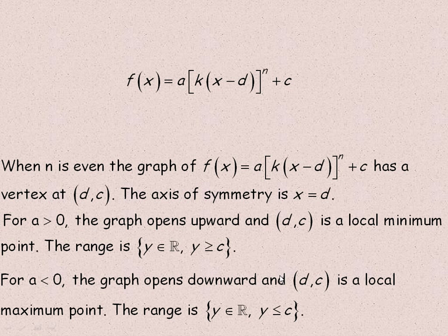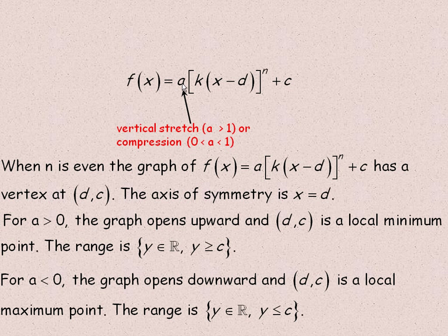The second page is a generalization of where you look in the equation for all the stretches, compressions, and translations. In general, any power function is x to the power of n — an nth degree power function. The constant 'a' multiplied by the whole function is the vertical stretch or compression factor. If a is greater than 1 it's a vertical stretch; if a is between 0 and 1 it's a vertical compression. If a is negative, there's also a reflection in the x-axis.